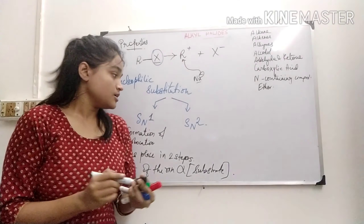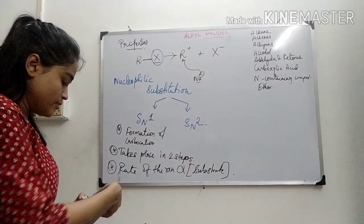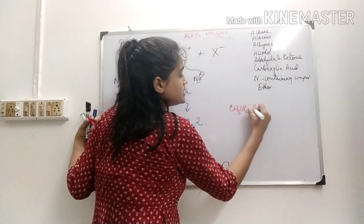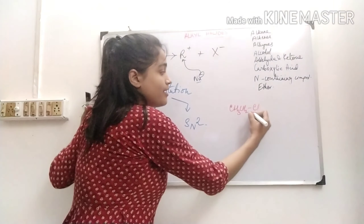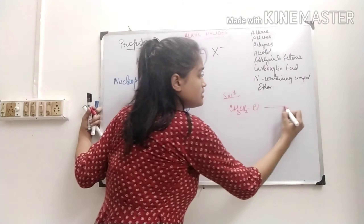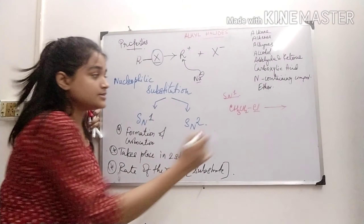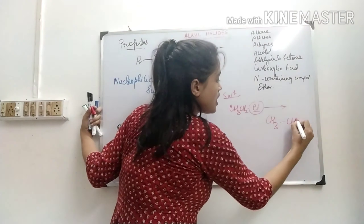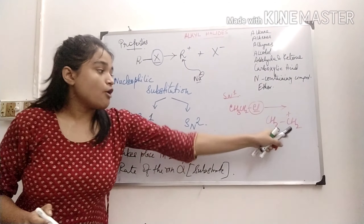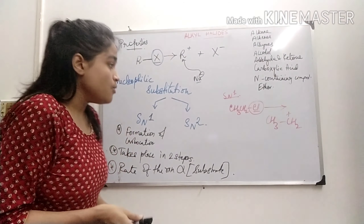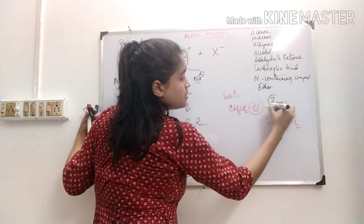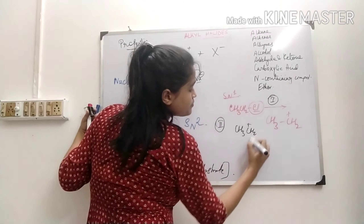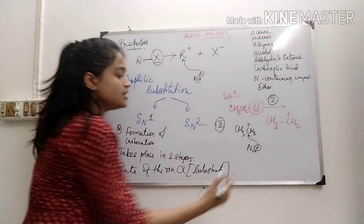The rate does not depend on the attacking reagent. For example, if I take CH3-CH2-Cl and it follows SN1 mechanism, the chlorine will leave the molecule and form a carbocation — a primary carbocation. This is the first step. The second step is that the nucleophile will come and attack this carbocation.